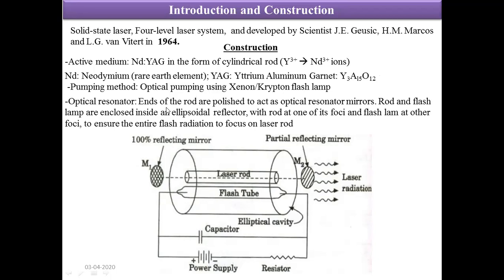The optical resonator is made up of two mirrors — one partially reflecting and another fully reflecting. These mirrors are coated on the flat, parallel ends of the cylindrical rod. The rod and flash lamp are enclosed in an ellipsoidal reflector, with the rod placed at one focus and the flash tube at the other focal point. This ensures that the entire flash radiation is focused onto the laser rod. The whole system is connected to a power supply and includes a water cooling system to manage heat.